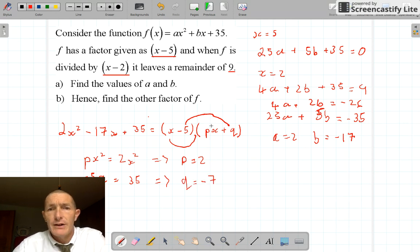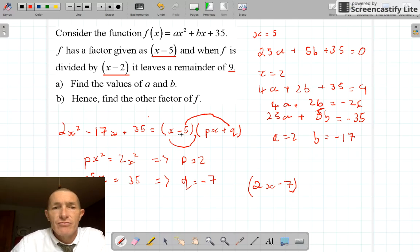So now I know the other factor is 2x minus 7. So very simple question to do if I remember about the remainder theorem making it equal to 9, factor theorem that equals 0, and then I just remember how to multiply out quadratics. You will see this is actually a straightforward quadratic, but you need to apply these more to cubics. So have a look at some exam questions on cubics and factor and remainder theorem.